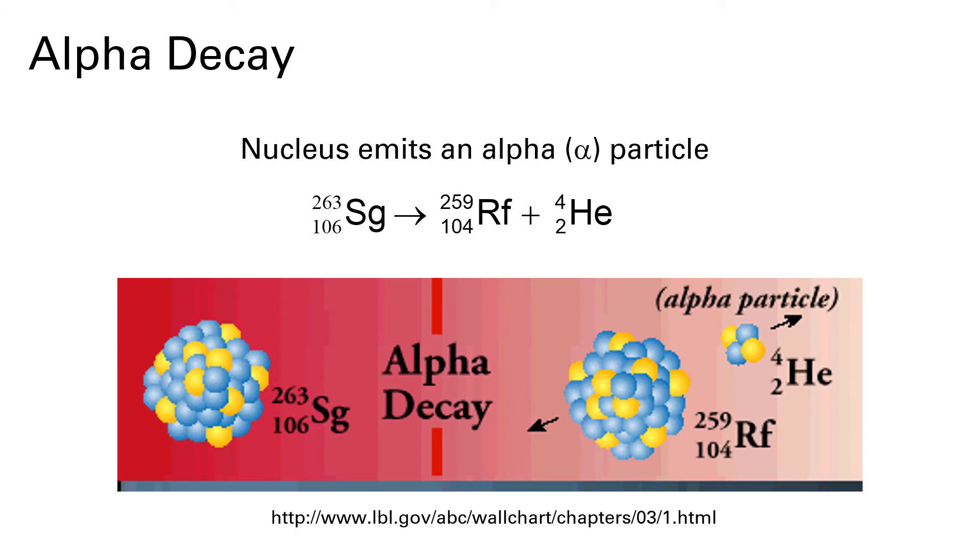Alpha decay is the process in which a nucleus emits an alpha particle. So the example here is a 263 isotope of seaborgium emits this alpha particle, right? So this alpha particle splits out of the nucleus. And then the other product here is whatever particles are left behind. When that alpha particle leaves, the nucleus loses two protons and two neutrons. And so all of the particles that are left behind make up this rutherfordium isotope.